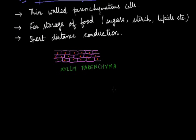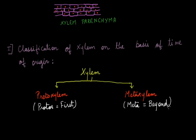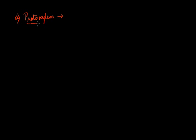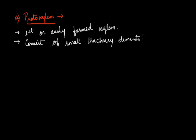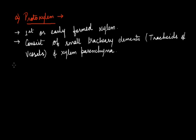Xylem elements can be classified on the basis of their time of origin into two types: proto-xylem and meta-xylem. 'Proto' means first and 'meta' means beyond, so proto-xylem are the first or early-formed xylem elements, while meta-xylem are formed after proto-xylem. Proto-xylem consists of small tracheary elements — tracheids and vesicles — and also contains xylem parenchyma. Xylem fibers are absent in proto-xylem. The thickening in proto-xylem tracheary elements is mostly spiral or annular, allowing stretching without rupturing.